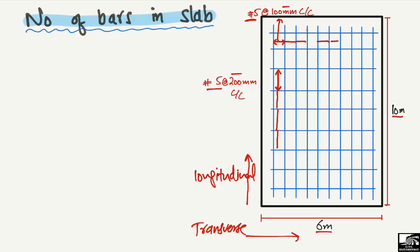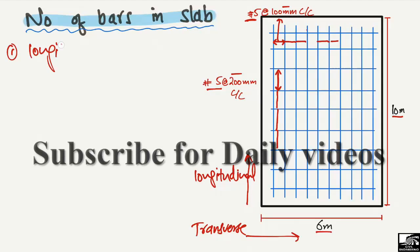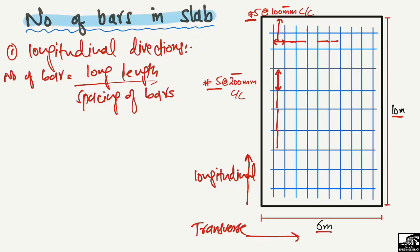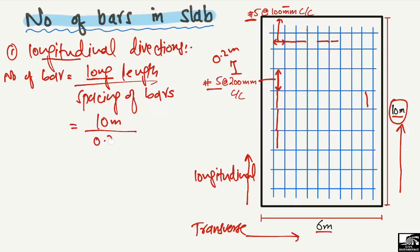We are interested in finding how many bars are used in each direction. In the longitudinal direction, the number of bars equals the longitudinal length of the slab divided by the spacing of the bars. The longitudinal length is 10 meters, divided by the spacing of 200 millimeters, or 0.2 meters. Meters cancel out and we get 50 bars.